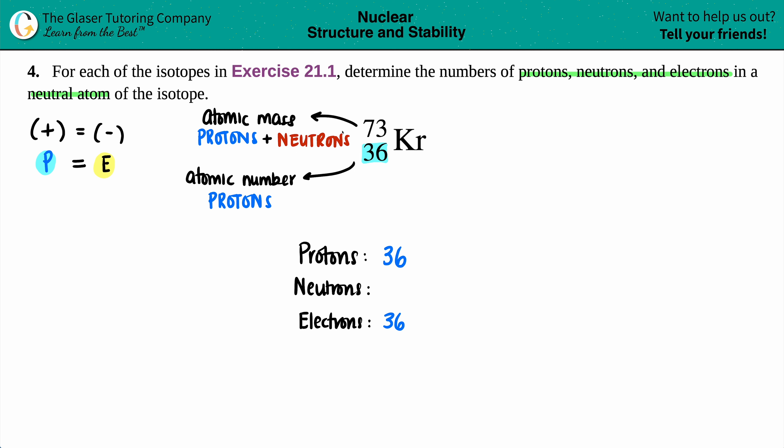So now here's a question for you: if we have the atomic mass of 73, which represents the protons and the neutrons, and we have an atomic number, which is just the protons, of 36, what would I have to do with these numbers to just get the neutrons?